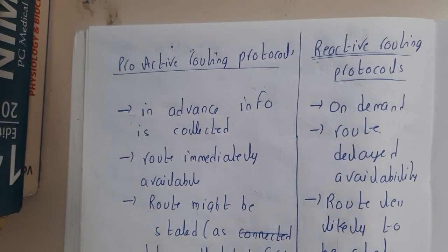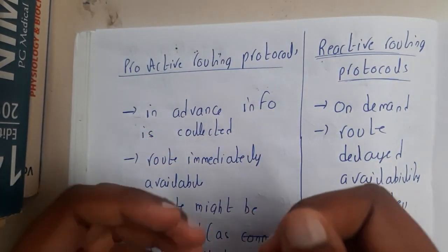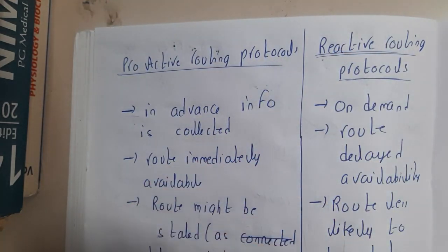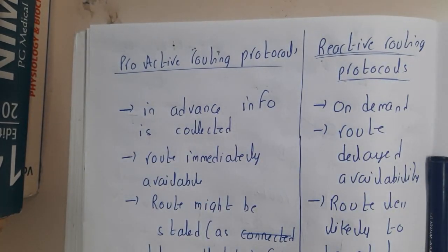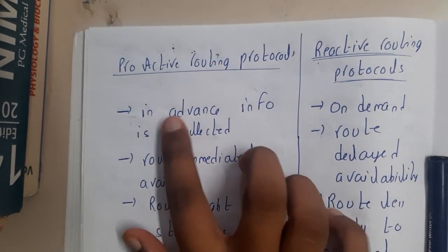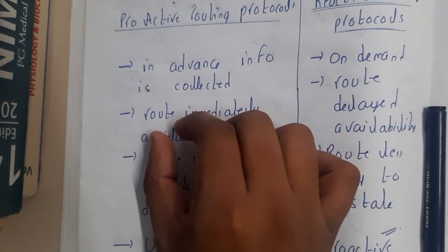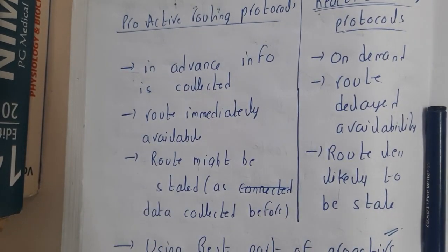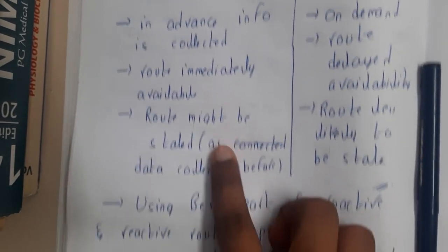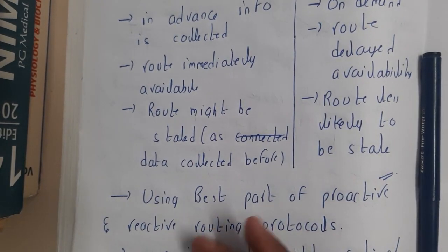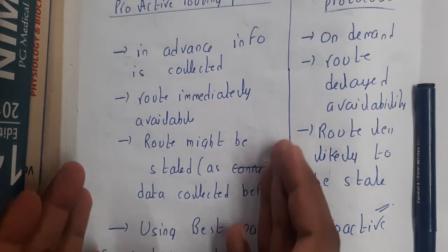Proactive means information is collected in advance. If someone is a proactive kid, he's ready for everything, so he collects information ahead of time. In advance, the information is collected and routing is done immediately. So whenever a request comes to send a packet, the node already knows the path. However, routing may use stale data since it was collected before — if a link has broken in between, it may not be updated.